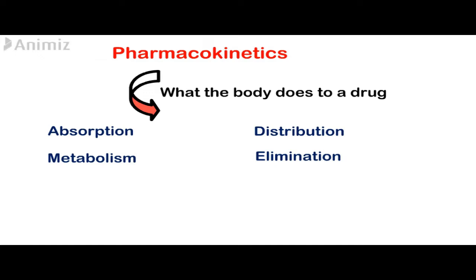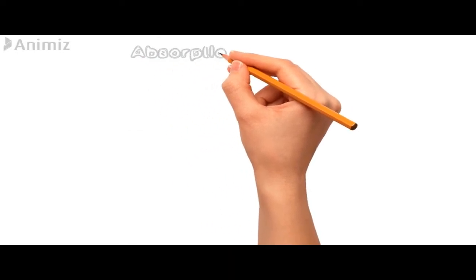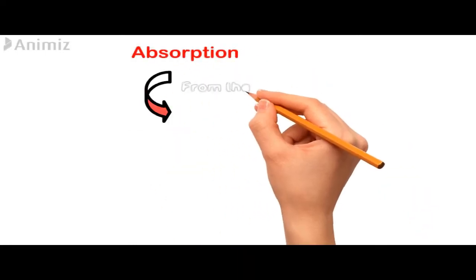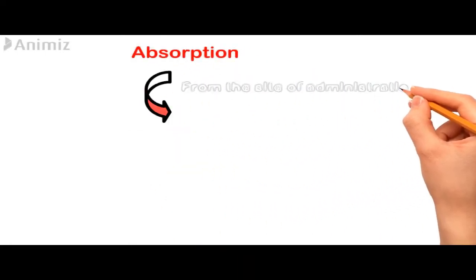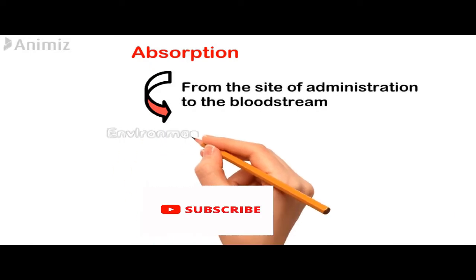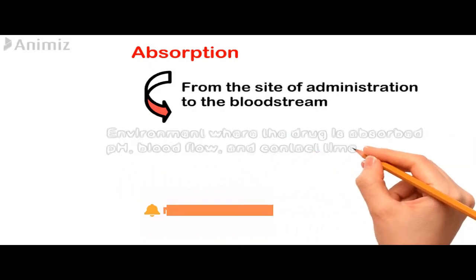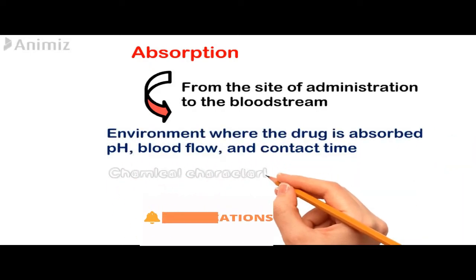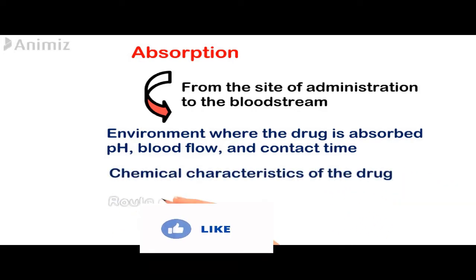The first one is absorption. When the drug is administered, it will firstly go through absorption, and then it will be distributed, metabolized and excreted. Absorption can be defined as the transfer of the drug from the site of administration, which is mainly from the mouth, to the bloodstream or the blood circulation.